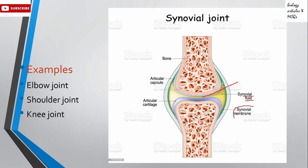The synovial fluid is enclosed in a membrane called the synovial membrane. You can see that the green membrane is the synovial membrane. There is another membrane also covering the synovial membrane, and that membrane is called the capsule — this can be called the articular capsule, or simply a fibrous capsule. So according to the structure of the synovial joint: the cavity is filled with synovial fluid, the synovial fluid is enclosed in the synovial membrane, and the synovial membrane is covered by the articular or fibrous capsule.